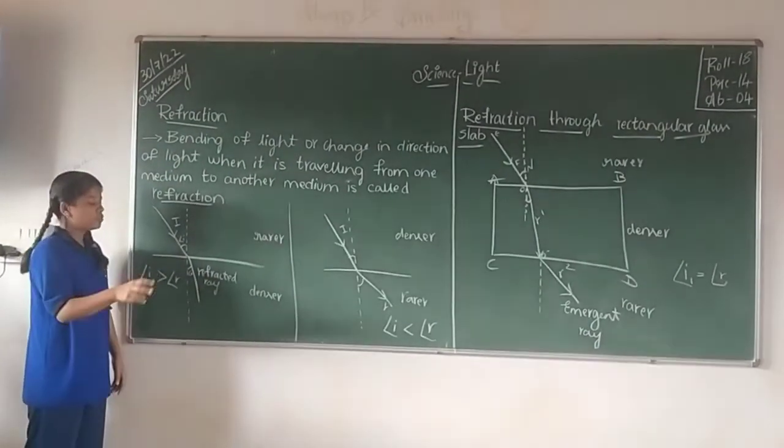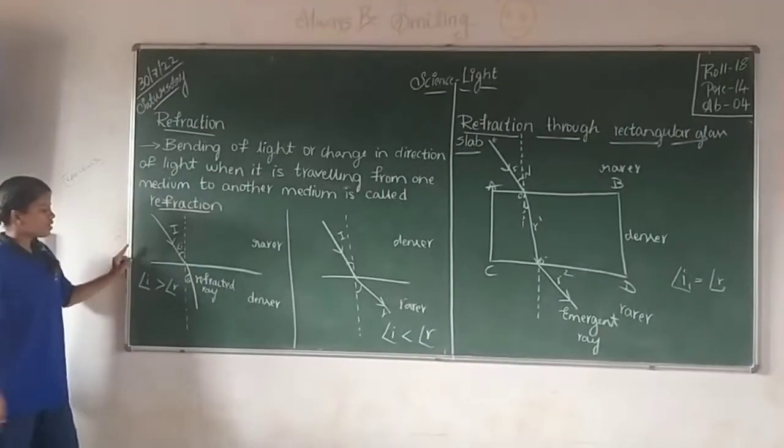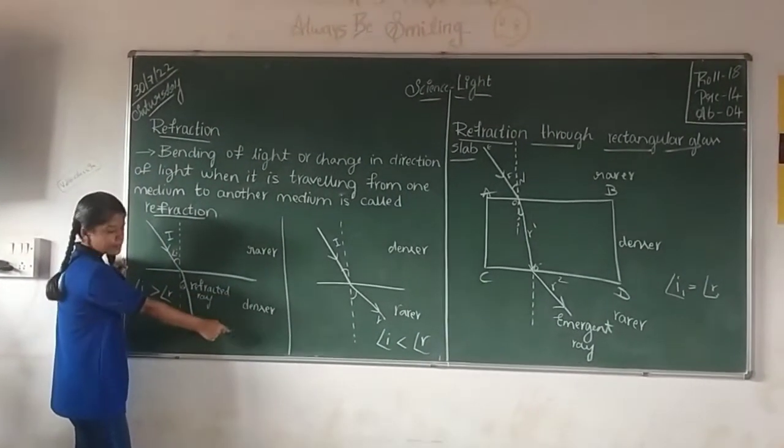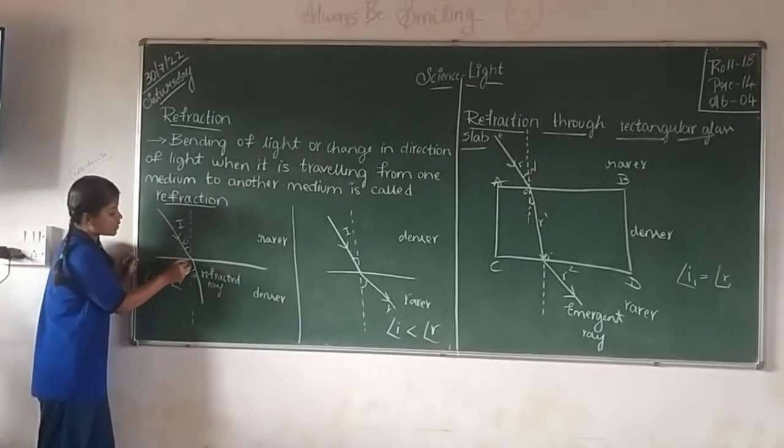So here we have two situations. First situation is: first we have rarer medium and second one is the denser medium. So here the incident ray is striking this normally.